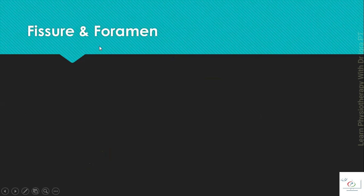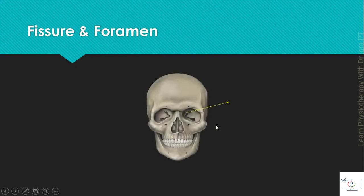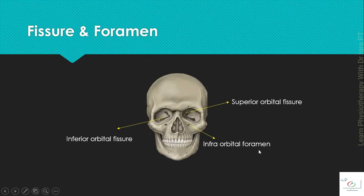The fissure and the foramen. Fissure is a narrow slit between two adjacent bones, while a foramen is an opening in the bone. The example of the fissure is the superior orbital fissure and the inferior orbital fissure. As they are present in the orbit, superiorly and inferiorly. And the examples of the foramen are the infraorbital foramen, because they are present below the orbit, and the mental foramen, because they are present in the mandibular bone.